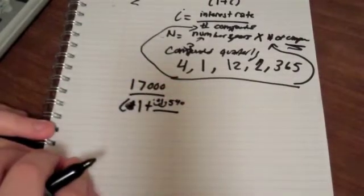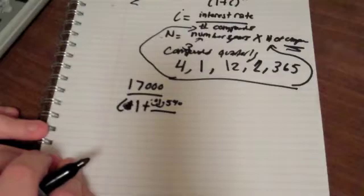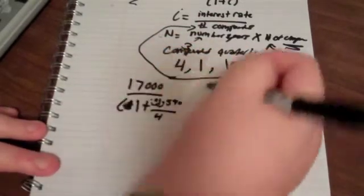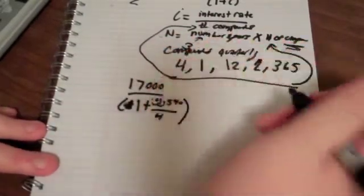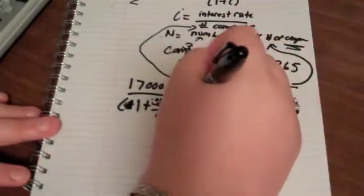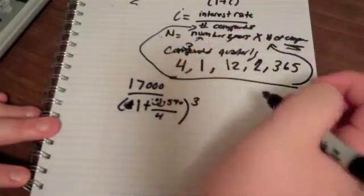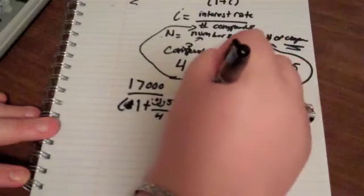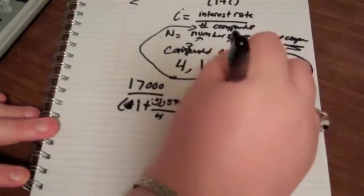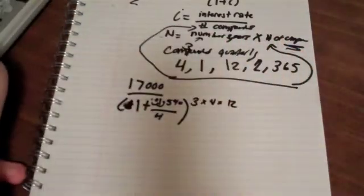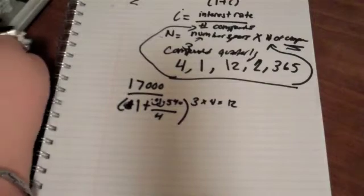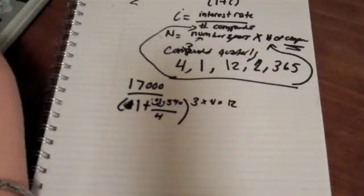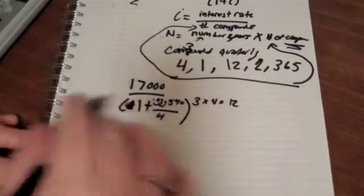And then, I guess, compounded, I don't know, we'll just do 4. That sounds cool. Compounded quarterly. And the N is the number of years. So, I want to buy my car in three years times the number of compounds, which is 4, and that's 12. So, you just type this in.